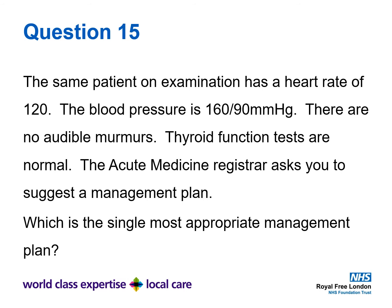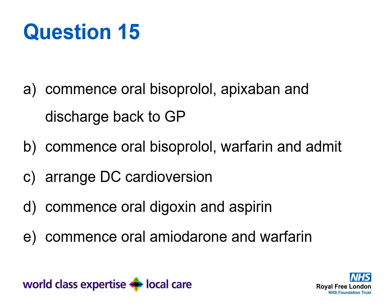Question 15. The same patient on examination has a heart rate of 120. Blood pressure is 160 over 90. There are no audible murmurs. Thyroid function tests are normal. The acute medicine registrar asks you to suggest a management plan. Which is the single most appropriate management plan? A: Commence oral bisoprolol, apixaban and discharge back to GP. B: Commence oral bisoprolol, warfarin and admit. C: Arrange DC cardioversion. D: Commence oral digoxin and aspirin. E: Commence oral amiodarone and warfarin.